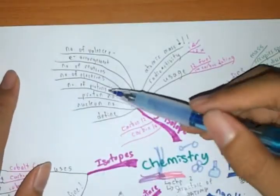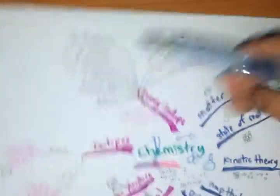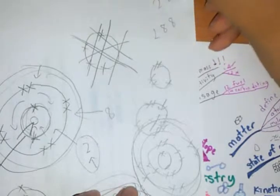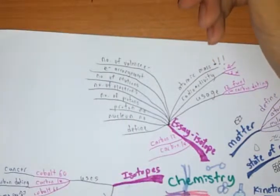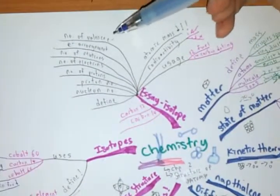There will be the proton number, nucleon number, number of protons, number of electrons, number of neutrons, electron arrangement, which basically just means something like 2.8.8 or 2.8.7, is basically the number of shells in the electrons. Then, the number of valence electrons, the electrons at the outermost shell.